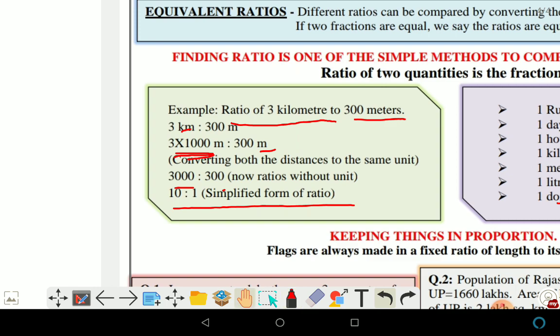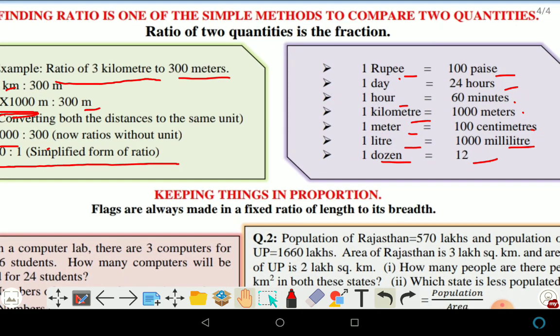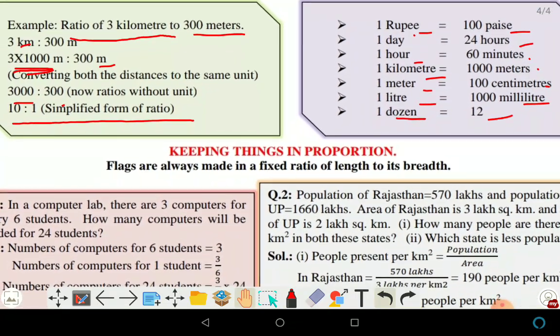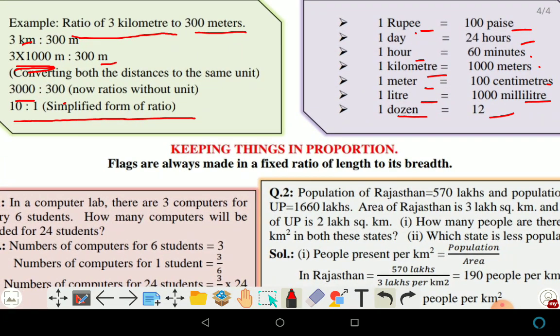Keeping this in proportion — flags are always made in a fixed ratio of length and breadth. As you may have seen, the ratio of all flags is the same: if length is 3 then breadth is 2.